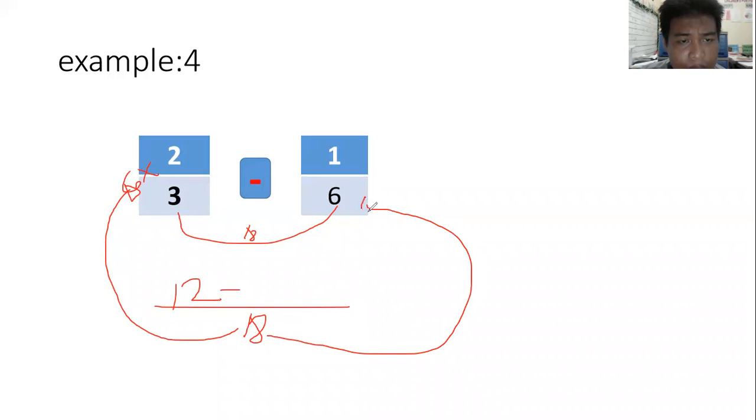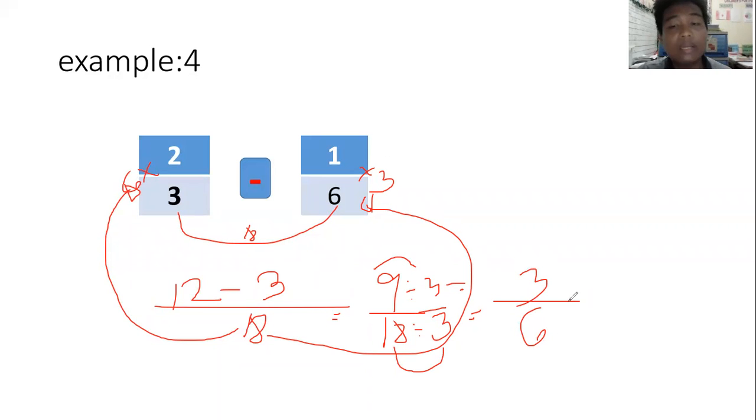Eighteen divided by three equals six, times two equals twelve. Eighteen divided by six equals three, times one equals three. So twelve-eighteenths minus three-eighteenths equals nine-eighteenths. Can we still simplify nine and eighteen? Yes, we can still simplify because they're divisible by three. We can still divide them by three.